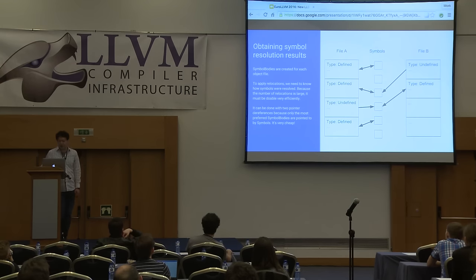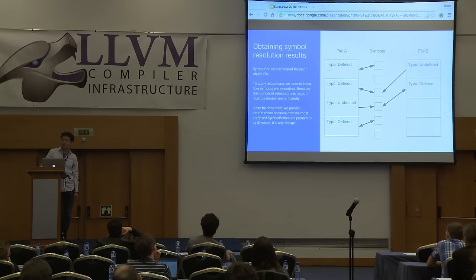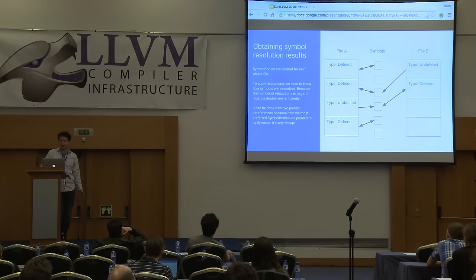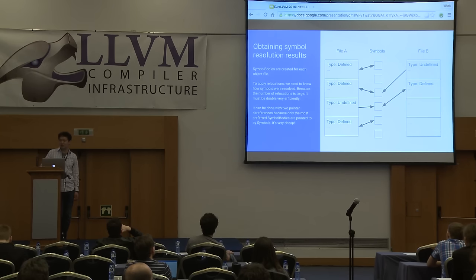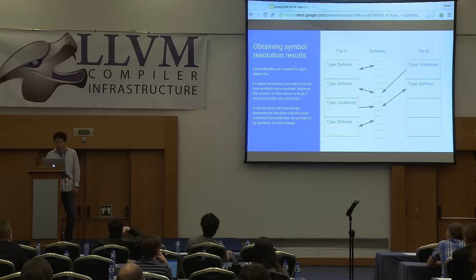In order to update relocations, we need to get the symbol resolution result. For example, to fill in the offset to printf, we need to know what printf resolves to. We could look up the symbol table by name, but as mentioned, we don't want to do that because it's slow — there can be tens of millions of relocations and the hash table lookup is too slow. Every clock counts when handling relocations. Our data structure works well here: each symbol body has a pointer back to its symbol. Starting from any symbol body, you can go back to its symbol and then to the resolved symbol body to get the resolution result. If every symbol has been resolved, you can reach the definition from any undefined symbol. It's just two pointer dereferences — very efficient.